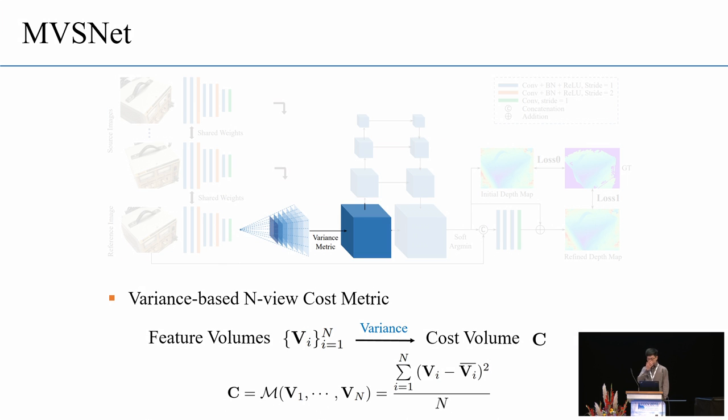So, after the differentiable homography warping, we will get N feature volumes. So, the next step is to combine the N feature volumes into one single cost volume. And we propose a variance-based cost metric that will calculate the element-wise variance of the feature volumes to explicitly measure their differences. Also, the variance operation takes arbitrary numbers of elements as input. And as a result, MVSNet is able to support arbitrary multiview images input without retraining the neural network.